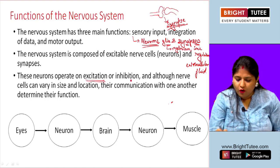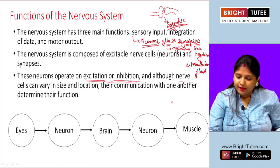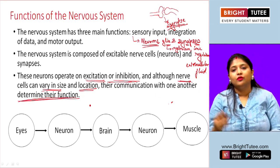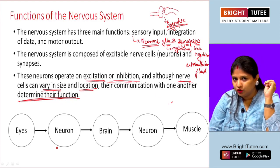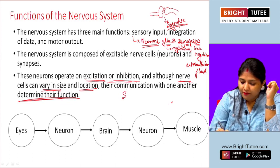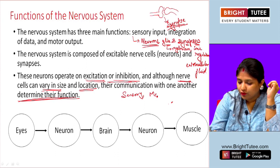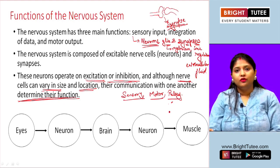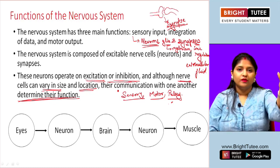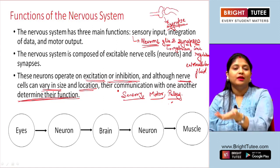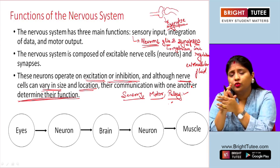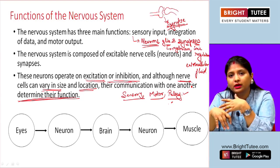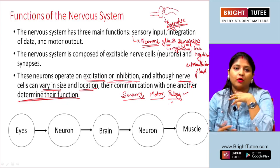Neurons operate on excitation or inhibition, and their communication with one another determines their functions. There are three important types of neurons: sensory neurons, motor neurons, and relay neurons. Sensory neurons receive information from sense organs and transmit it to the relay neuron. The relay neuron sends it to the brain, and from the brain the processed information goes back to the relay neuron and then to the motor neuron.